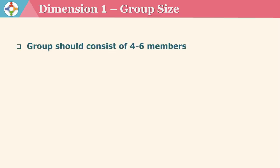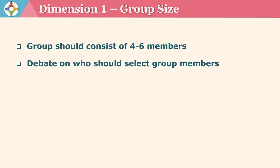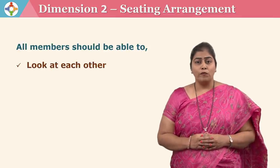Let us look at different dimensions of cooperative learning. The first very significant dimension is group size. Along with group size, the group composition is of extreme importance. The teacher, while using cooperative learning strategy, should keep in mind that a group should consist of four to six members. There are debates on whether the teacher should select the group members or give freedom to students to select their own group members.